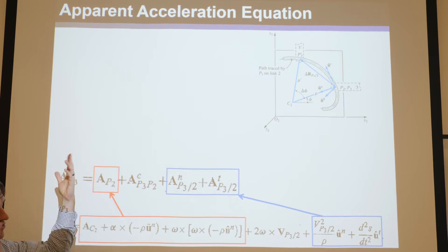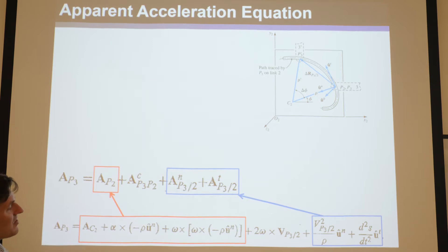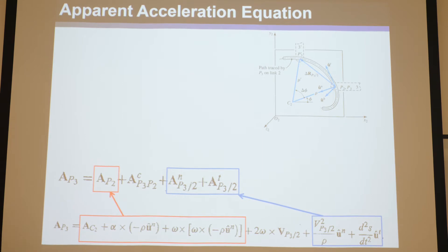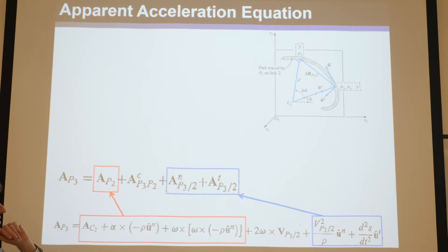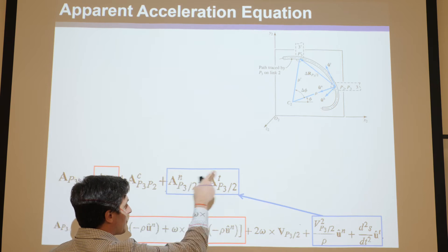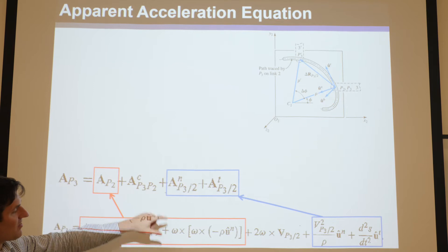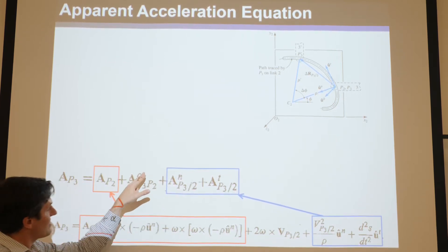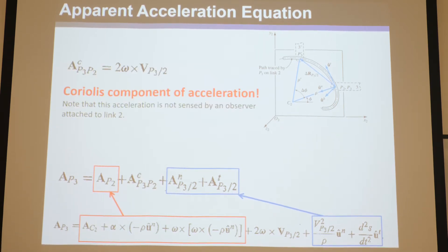You take basically the acceleration of the truck, or link two — the point P2 below P3 — and then you take the apparent acceleration of point P3 with respect to two. That's the speed of the baseball with respect to the truck, and if you just add them, you get the full acceleration of P3, where the only trick is there's the expected normal tangential component. But we have this other term that's very confusing: this two omega cross VP3 with respect to two, and that's because that is the Coriolis acceleration.